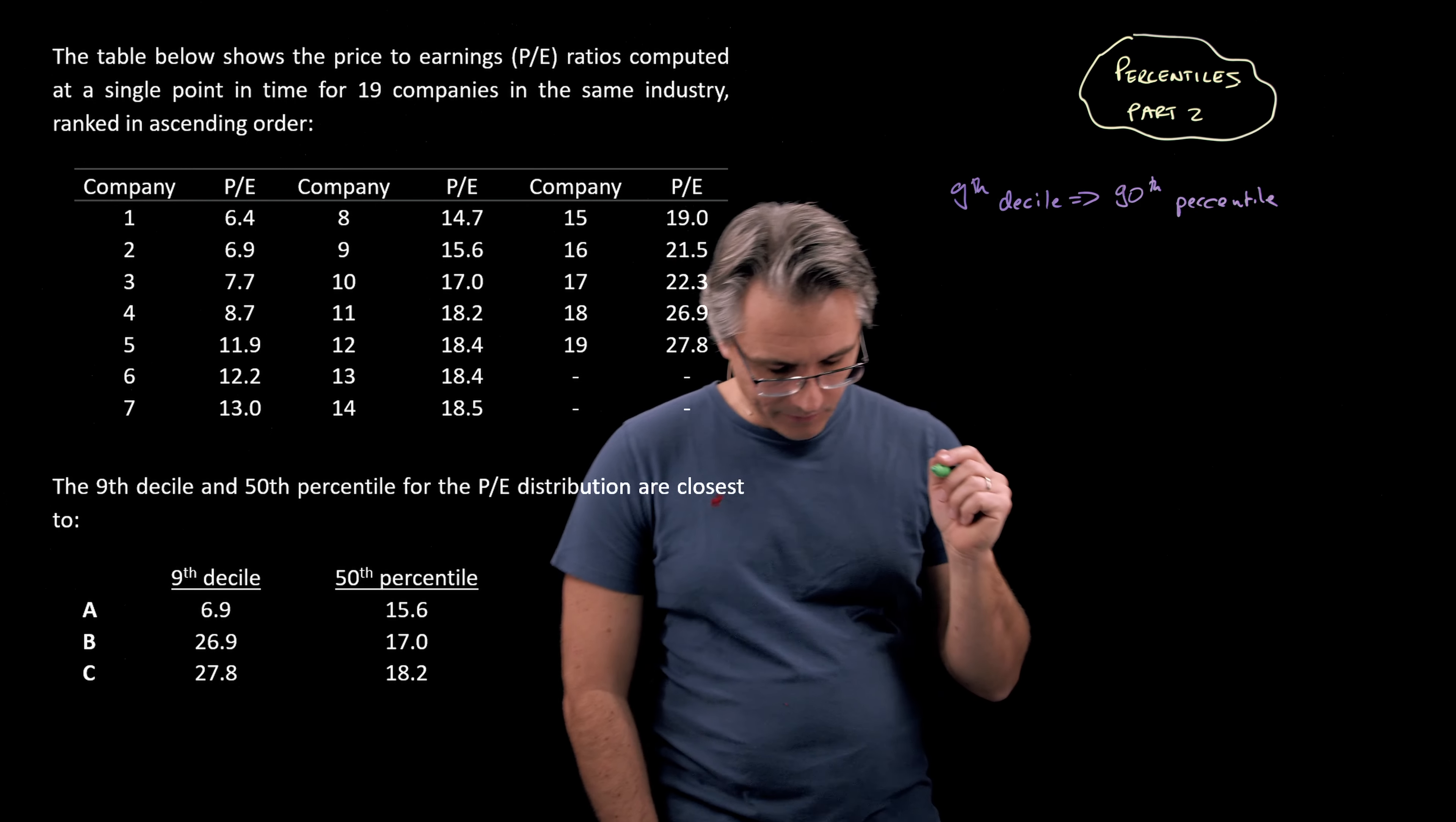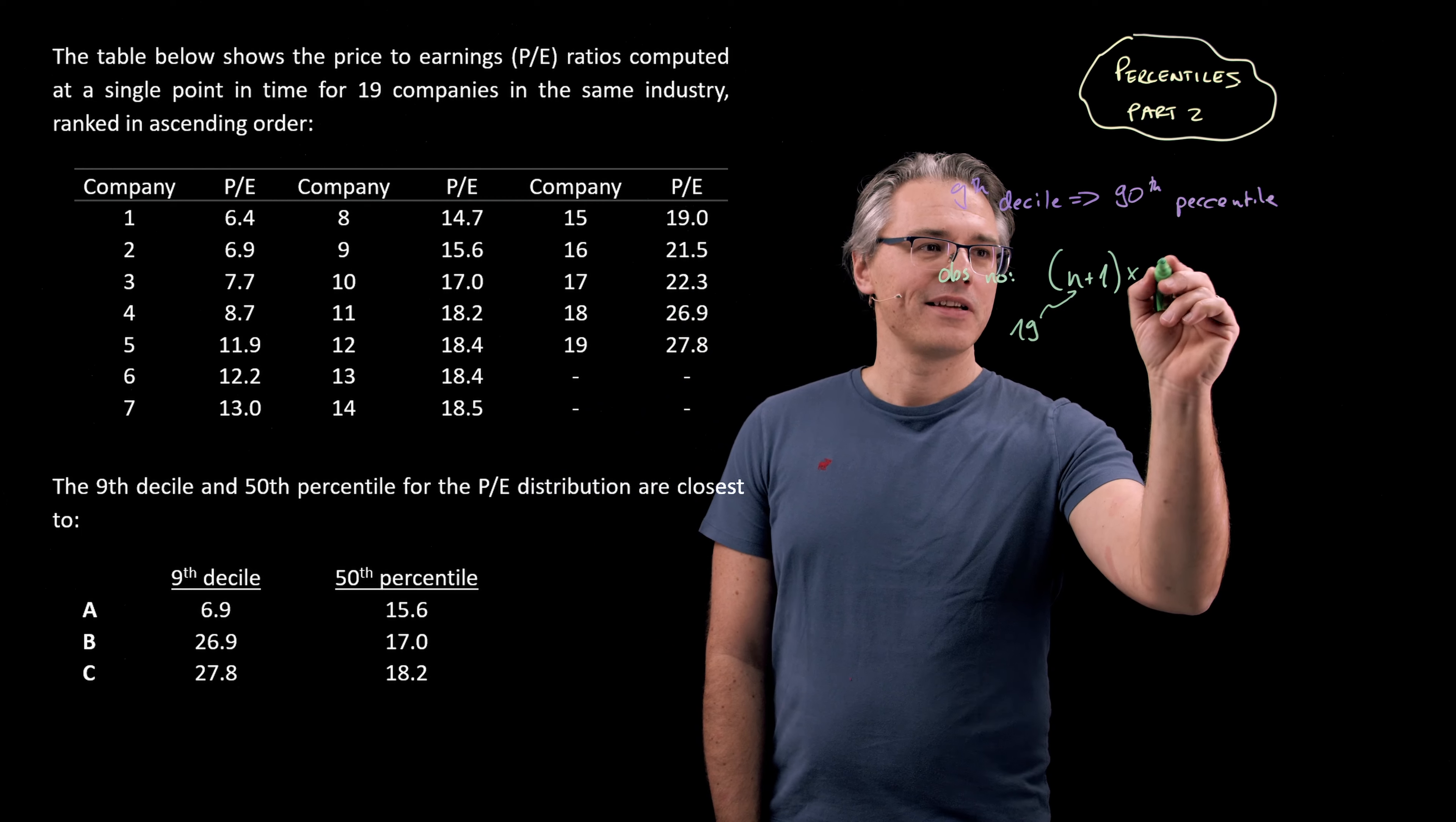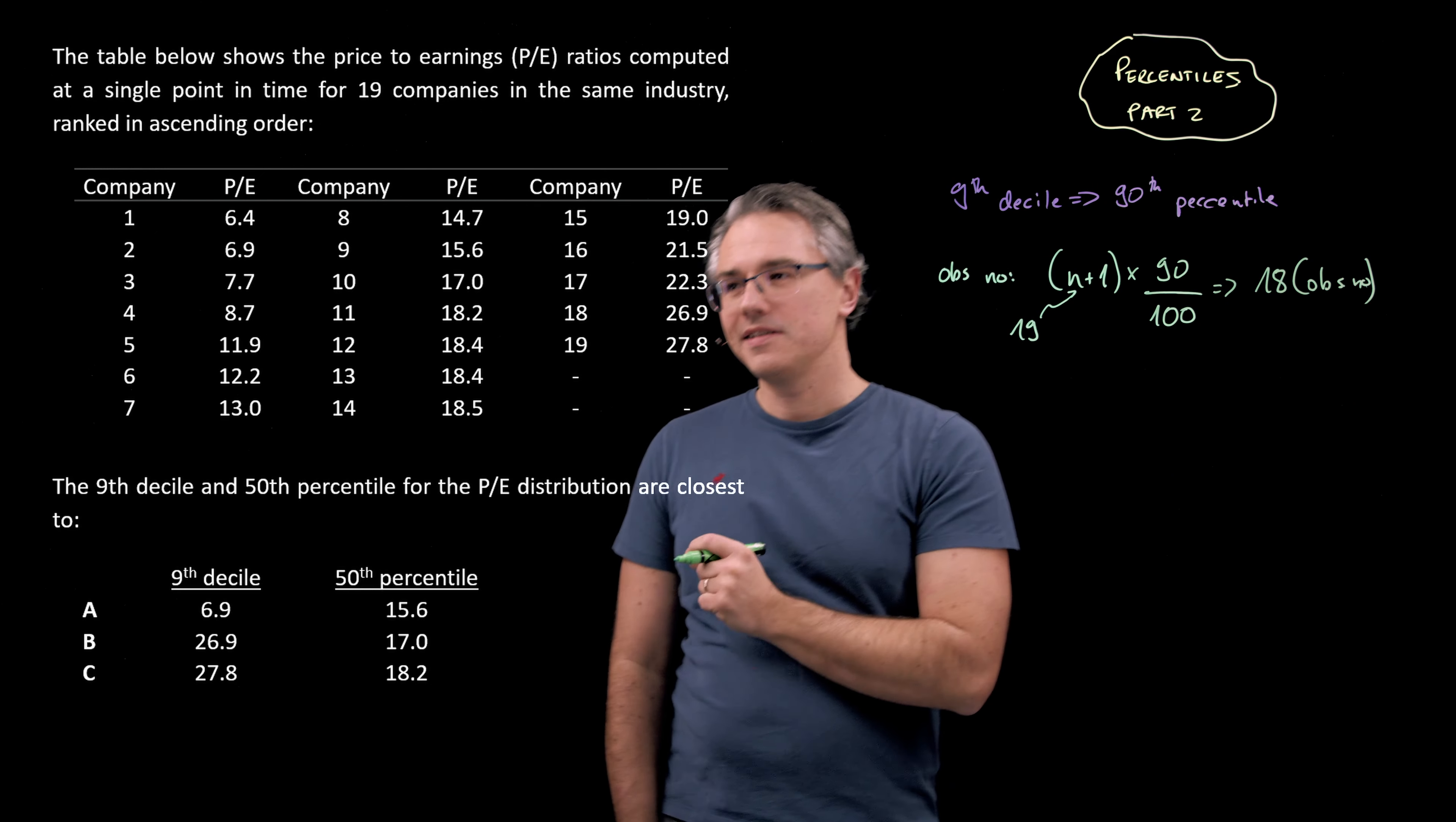Well, the observation number is going to be n plus 1, where n is the number of observations in total, that's 19. So 19 plus 1 is obviously 20, times 90 over 100. So what is this going to be? 20 times 9 over 10, that's going to be observation number 18. So that's the observation number. That's not the value itself.